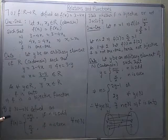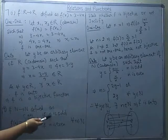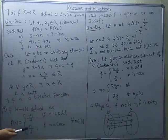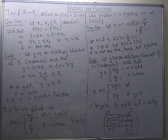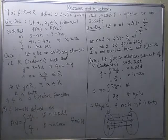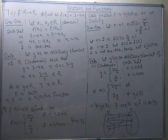Now look at question 9. Here the function is from the set of natural numbers to natural numbers, defined as f(n) = (n+1)/2 if n is an odd natural number, and f(n) = n/2 if n is an even natural number. We have to check whether it is bijective or not and justify. If the very first condition — being one-one — is not fulfilled, then we can say it is not bijective and the work is done.